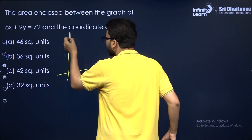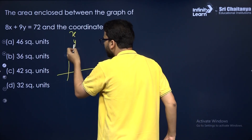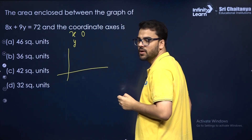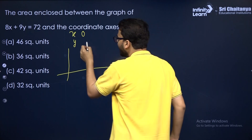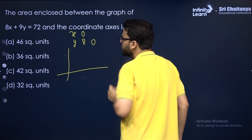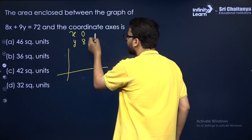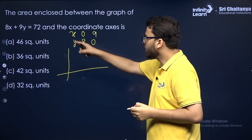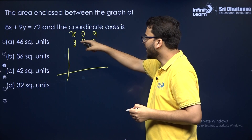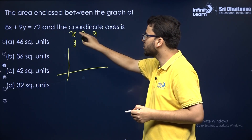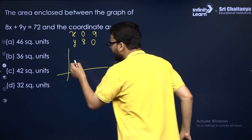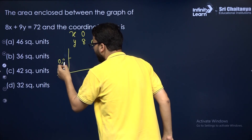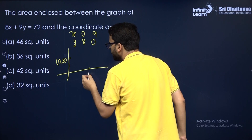The most simple thing you can do here is take x equal to 0. If I take x equal to 0, y will be 8, and if I take y equal to 0, x will be 9. So if you put x equal to 0, y equals 8, and if you put y equal to 0, x equals 9. Therefore, the graph of this equation will pass through (0, 8) and (9, 0).